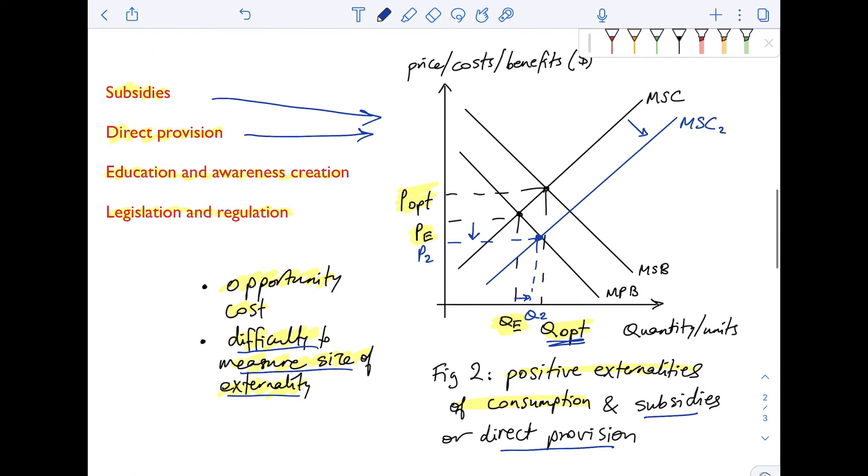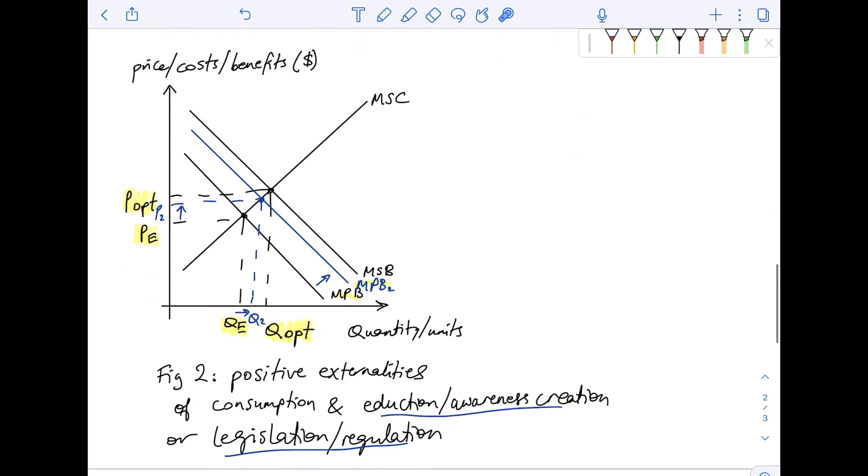So remember, subsidies and direct provision will increase supply, the MSC curve will shift to the right to MSC2, while education awareness creation, legislation regulation will shift the MPB curve, which is the demand curve to the right, from MPB to MPB2.